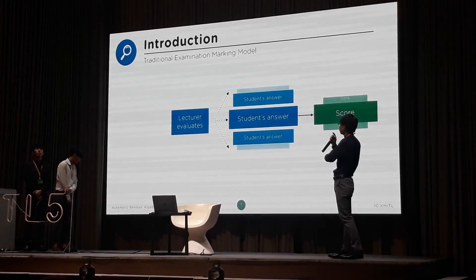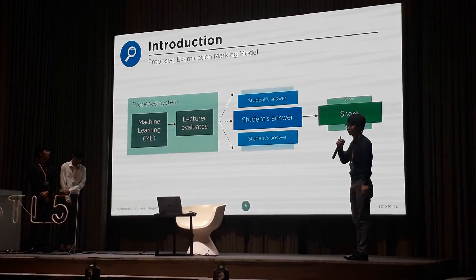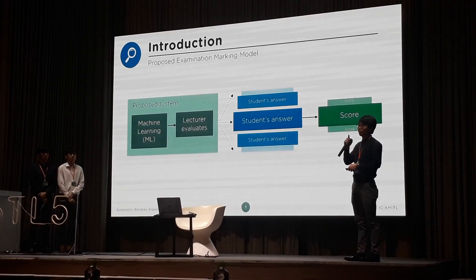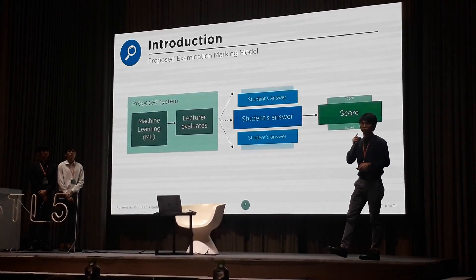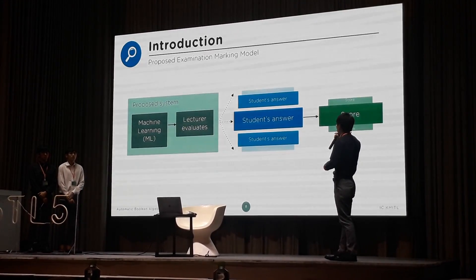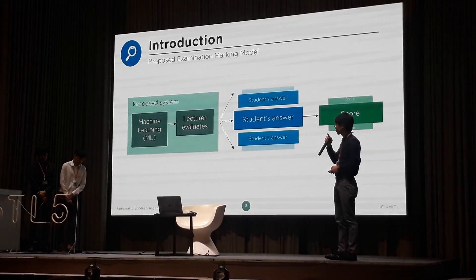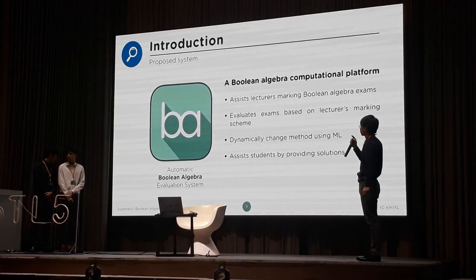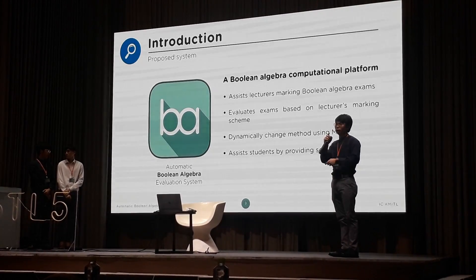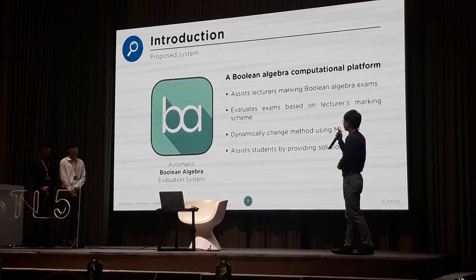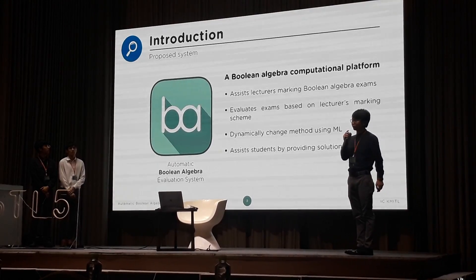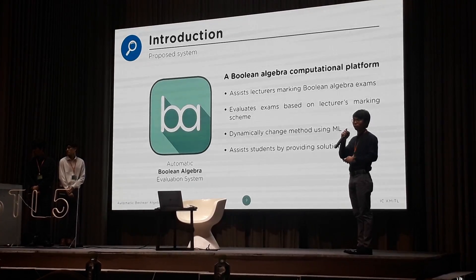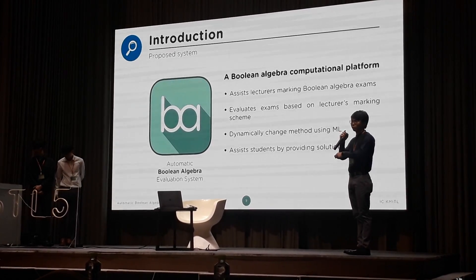So we want to speed up this model. What we want to do is use machine learning to learn the preference of the lecturers, and then use that machine learning model to evaluate the student answers afterward. So after we had a proposition in mind, we created a system called the Automatic Boolean Algebra Evaluation System.